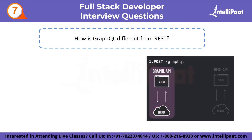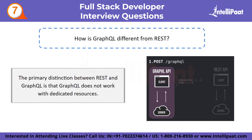Seventh question: how is GraphQL different from REST? The primary distinction is that GraphQL does not work with dedicated resources. Instead, everything is viewed as a graph which is connected and can be queried to meet the needs of the app.